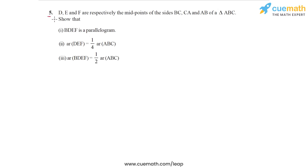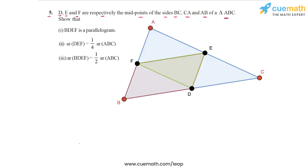In question 5, we are given that D, E, and F are respectively the midpoints of the sides BC, CA, and AB of a triangle ABC. Here's a figure I've drawn for you — triangle ABC in which D, E, and F are midpoints of the sides.